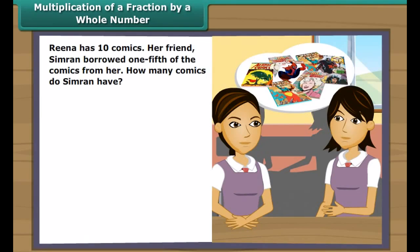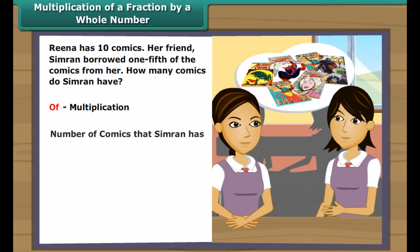Reena has ten comics and her friend Simran borrowed one-fifth of them. How many comics does Simran have? Remember, 'of' means multiplication. Simran has one-fifth of ten comics, which means one-fifth multiplied by ten, which equals two. So Simran has two comics.